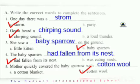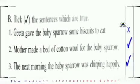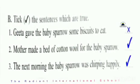This you have to complete in your flowers worksheet. Next is: tick the correct sentence which are true. First: Gita gave the baby sparrow some biscuits — no, she gave breadcrumbs, so this is wrong. Then: mother made a bed of cotton wool for the baby sparrow — yes, so we will tick this. Then the next morning the baby sparrow was chirping happily — yes, so here you also have to tick.